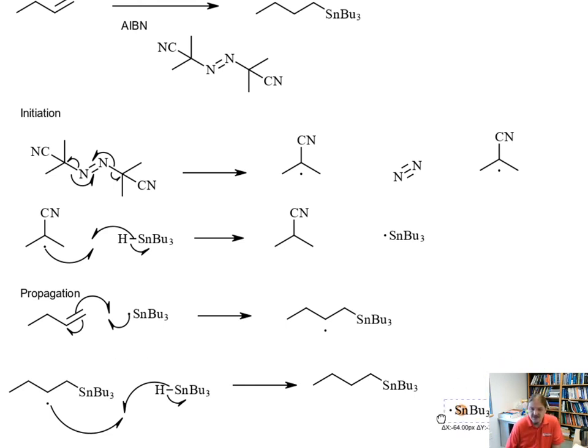Here is the second reaction I wanted to share with you, which is hydrostanylation. These are just two examples; there are others out there. These are two that are done reasonably commonly. Between this video and the one on the addition of HBr, I think I've given you the tools to understand other radical additions to alkenes. Thank you for watching.